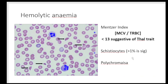In beta thalassemia trait, the RBCs are being destroyed, so the bone marrow goes into overdrive producing more immature RBCs. The mean corpuscular volume is low but the total RBC count is high. The Menzier's Index — MCV divided by total RBC count — uses a cutoff of 13: values less than 13 indicate more RBCs entering the system, favoring beta thalassemia, while values greater than 13 suggest iron deficiency anemia. Low MCV with increased RBC count, Menzier's Index, and RDW together give a clear picture.